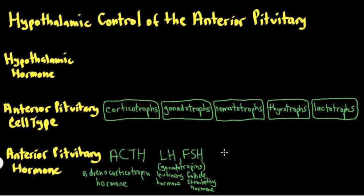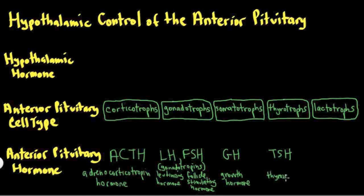Somatotrophs release a hormone called growth hormone, sometimes called somatotropin, abbreviated GH. Growth hormone stimulates growth of the body, mostly through its effects to stimulate another hormone called insulin-like growth factor 1 (IGF-1). Together, GH indirectly through IGF-1 stimulates the growth of bones and various other structures. Thyrotrophs release TSH, which stands for thyroid-stimulating hormone, because it stimulates the growth and function of the thyroid gland. It's also called thyrotropin — TSH and thyrotropin are interchangeable terms, just like LH and FSH are interchangeable with gonadotropins.